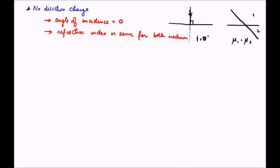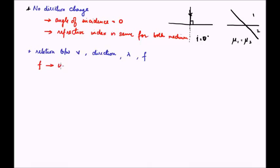Now let us see the relation between change of speed, direction, and wavelength of light due to refraction, and also the relation involving frequency. Let us start by discussing what frequency depends on. The frequency of a wave is independent of the medium — it is decided by the frequency of the source, so the frequency will remain the same in any medium.